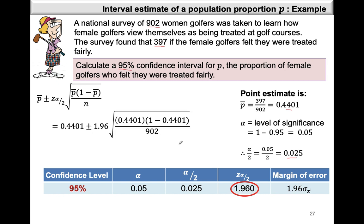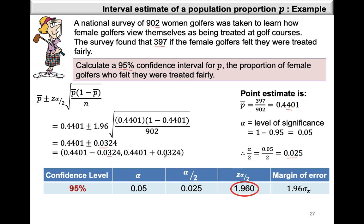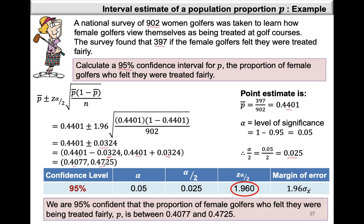We replace all values into our formula: 0.4401 plus or minus 1.96 times the square root of 0.4401 times 1 minus 0.4401 divided by 902. We end up with a margin of error of 0.0324. So our interval will be 0.4401 minus 0.0324 and 0.4401 plus 0.0324, giving a final interval of 0.4077 to 0.4725. We are 95% confident that the proportion of female golfers who felt they were treated fairly is between 0.4077 and 0.4725.